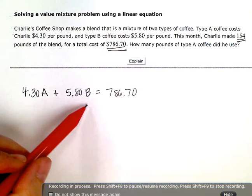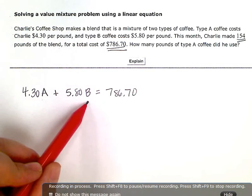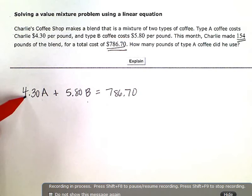But I'm not solving for B. I can't have two variables here because I need to solve this equation. And I can only solve an equation if I have one variable, and I want to solve for A.